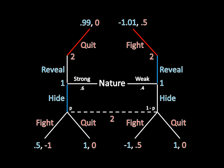So given that, Player 2's updated belief, conditional on observing hiding, is that Player 1 is definitely the strong type with probability 1 and the weak type with probability 0. In this case, now she's focusing her strategy purely on what her payoffs would be if she were thinking that Player 1 is that strong type. So looking at her payoffs in the bottom left corner, she gets a payoff of 0 for quitting, negative 1 for fighting — so she's going to quit.